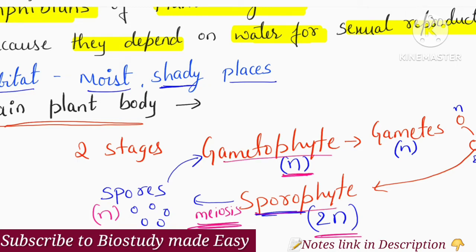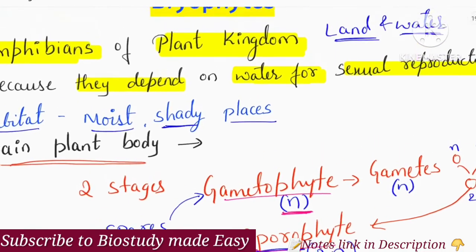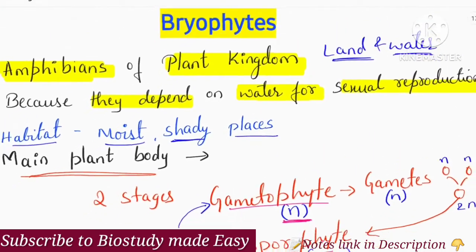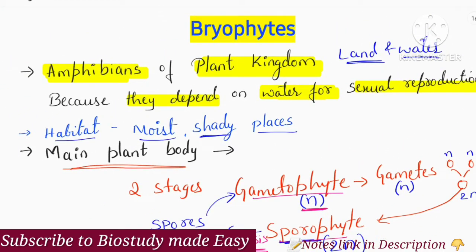These two stages — gametophyte and sporophyte — are produced by plants in the life cycle. In bryophytes, the main plant body is the gametophyte. We need to understand whether the main plant body is gametophyte or sporophyte.